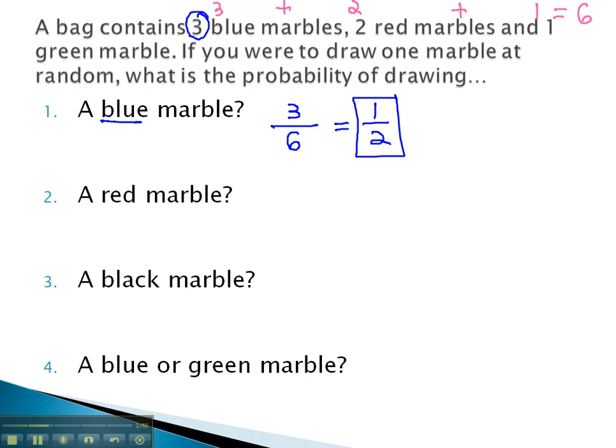What about a red marble? Well, with the red marble, we put in the numerator how many we want. There are 2 red marbles. There are 6 marbles possible, and 2 out of 6 reduces to 1 third. So we would say we have a 1 third chance of getting a red marble.